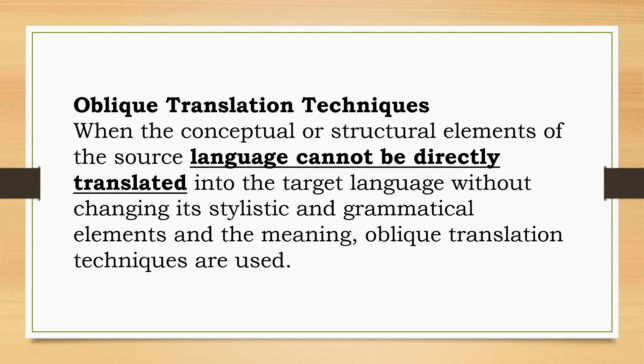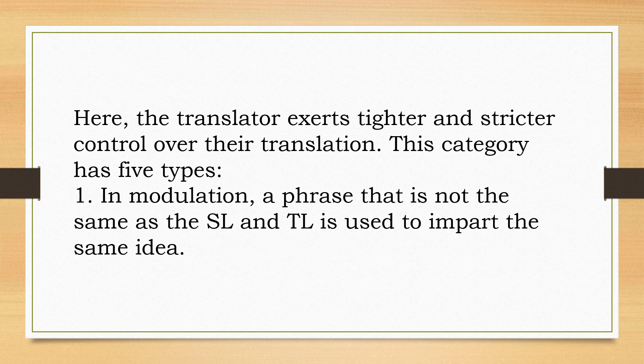Oblique translation techniques are used when the conceptual or structural elements of the source language cannot be directly translated into the target language without changing its stylistic, grammatical elements, or meaning. Here, the translator exerts tighter control over their translation. This category has five types.